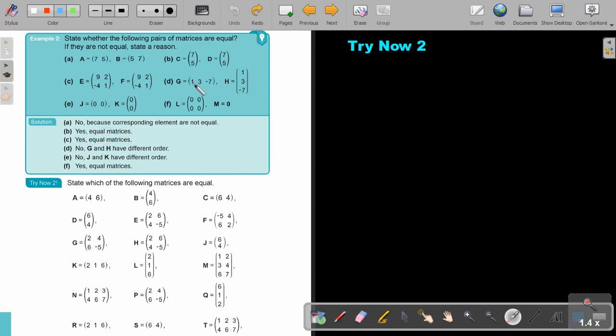But look at this one. Although the elements is almost in the same order, one, three, seven, one, three, seven. But this, the orders are different because this is a one by three and this is a three by one. So, no, not equal because different order.